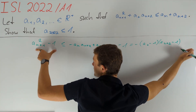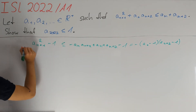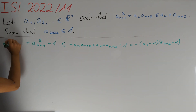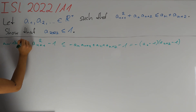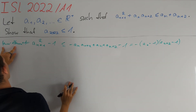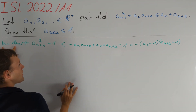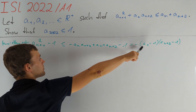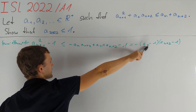The left side is now a difference of squares, which is also factorizable as (aₙ₊₁ minus one)(aₙ₊₁ plus one). Notice that we get an (aₙ₊₁ minus one) on the left, which we would also get on the right side if we replaced n by n plus one everywhere.